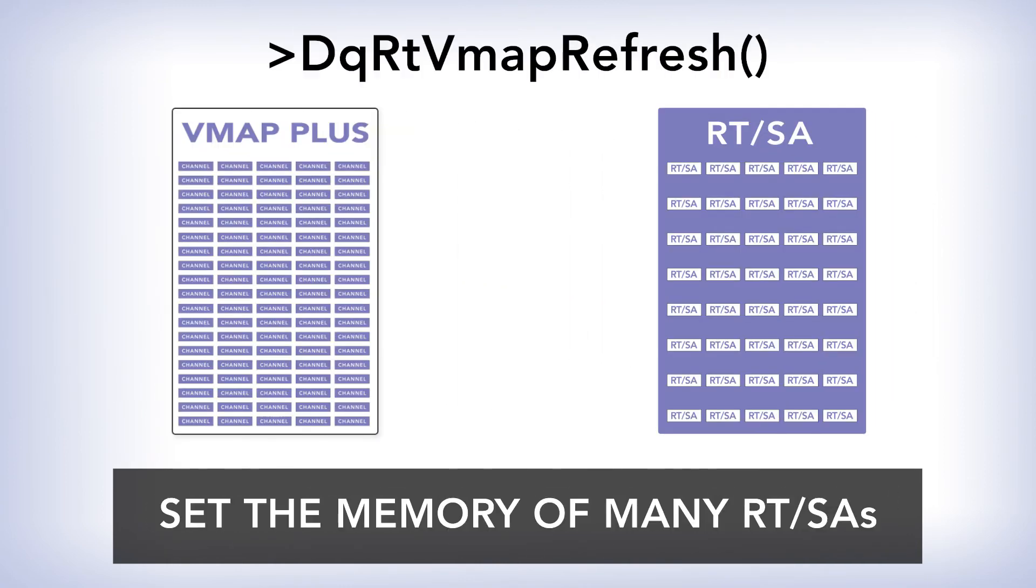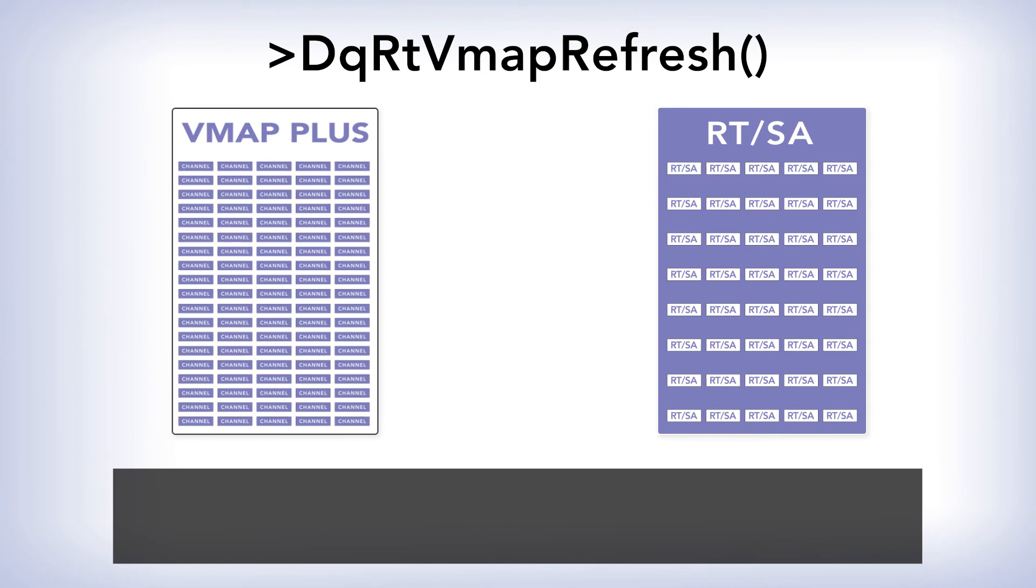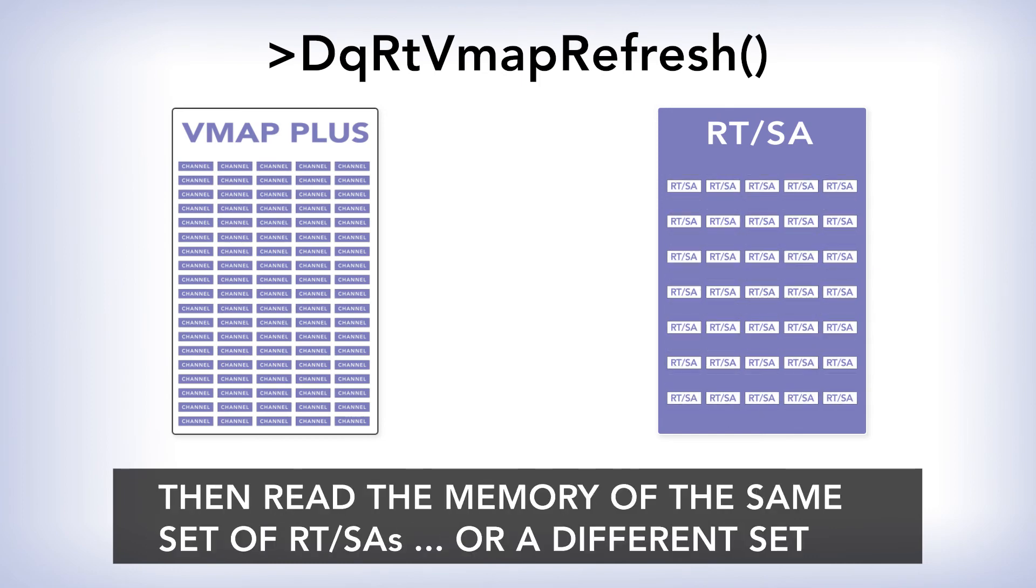So in one call, you can set the memory of many RTSAs for an RT to BC command, and then read the memory of many RTSAs to receive the data sent from a BC to RT command.